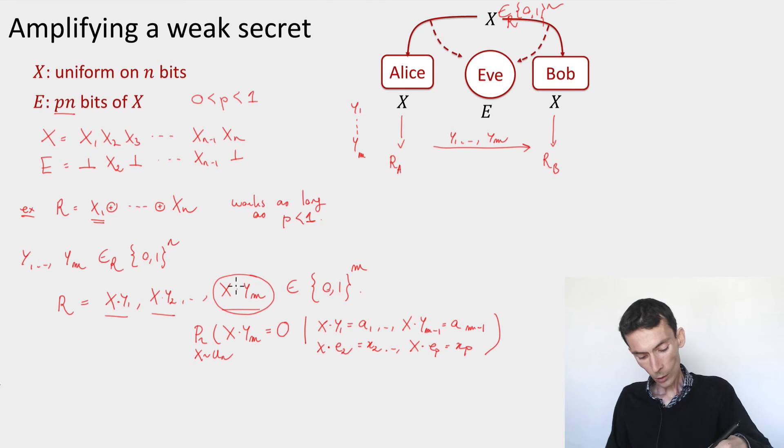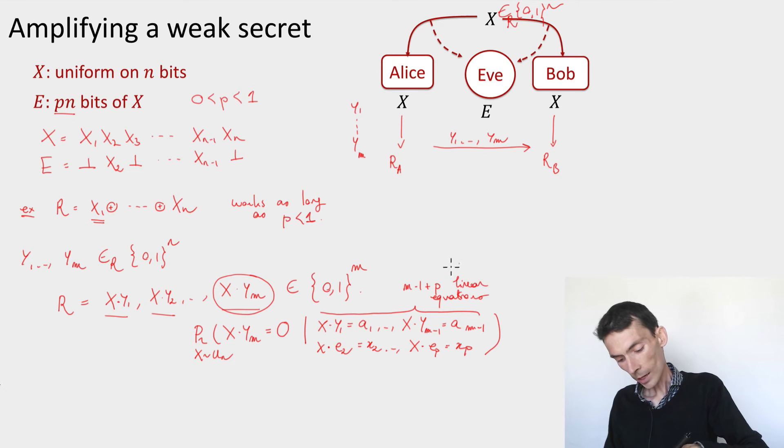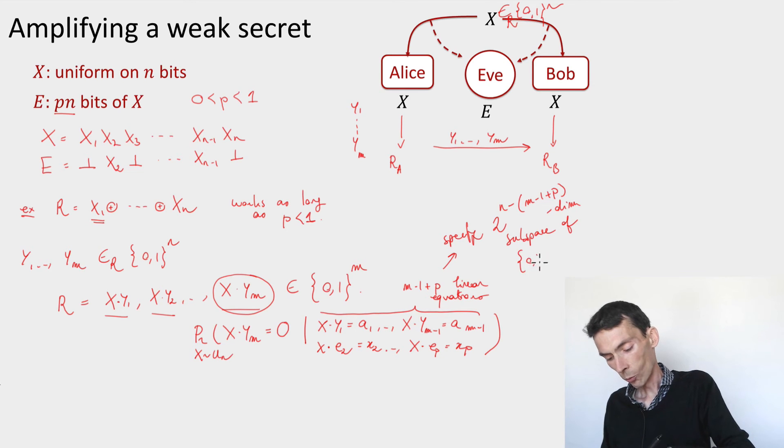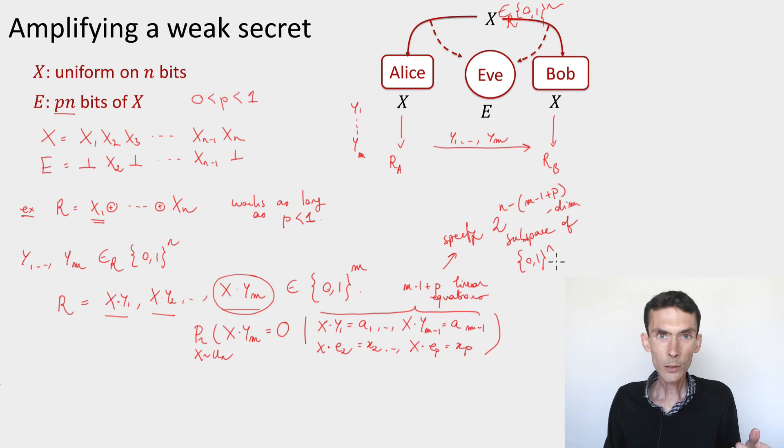Now what is the distribution of this? Well here we have m-1 plus p linear equations and these specify a 2^{n minus (m-1+p)} dimensional subspace of {0,1}^n. And so this conditioning is equivalent to saying instead of choosing x uniformly random over the whole space we're taking it uniformly random in that subspace. And x·y_m, as long as y_m is linearly independent from the equations that we have so far, then this bit is going to be uniformly distributed provided the subspace is not empty.